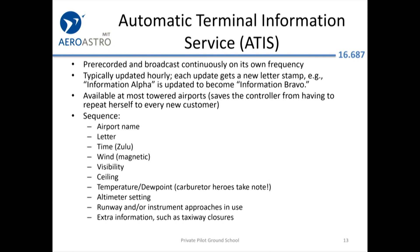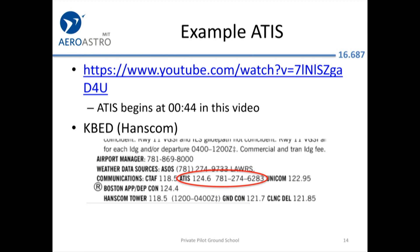The ATIS provides a whole bunch of weather information: time, wind, visibility, ceiling, and other things. It'll also tell you local information — if a taxiway is closed, or right now you're likely to get warnings about snow piled up on certain parts of the airport. There's also a phone number you can call from your regular phone to listen to the ATIS information. It updates approximately once an hour, and can update more often if weather is changing frequently.